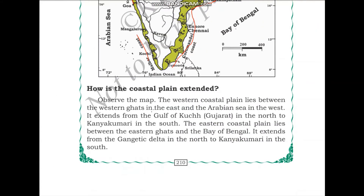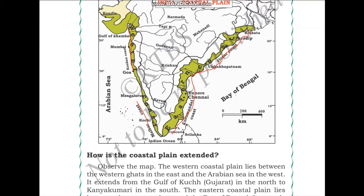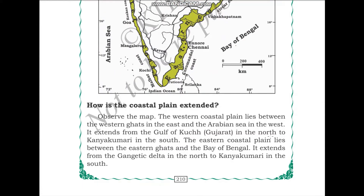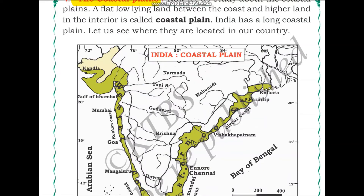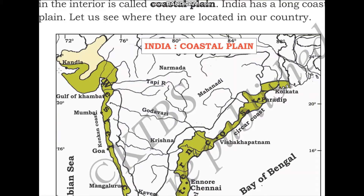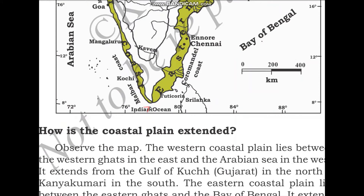The western coastal plains lie between the Western Ghats in the east and the Arabian Sea in the west. They extend from the Gulf of Kutch in the north to Kanyakumari in the south. The Gulf of Kutch is in this area, and Kanyakumari is the southernmost tip of India.